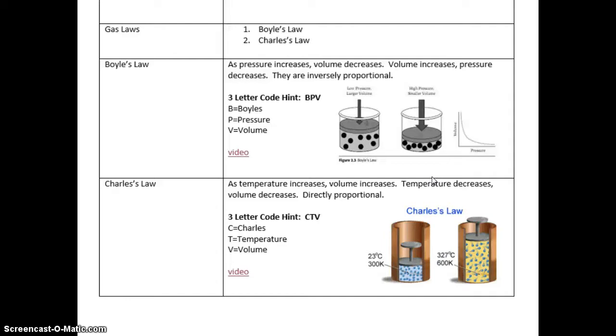Charles says that as the temperature increases, our volume increases also. Or as the temperature decreases, the volume decreases. We say that they are directly proportional. So, if one goes up, the other goes up. One goes down, the other goes down. Charles has a three-letter code hint as well. CTV. C for Charles, T for temperature, V for volume.